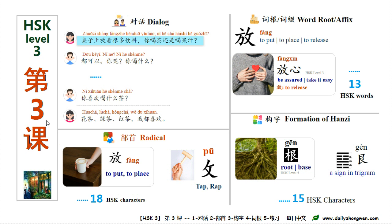Hello everyone, welcome to Daily中文, 每日中文. Today, let's study Lesson 3 of HSK Level 3. In this lesson, we will learn a conversation and related grammar points, the radical 攴 (不守), the component 更, and the word root 放.